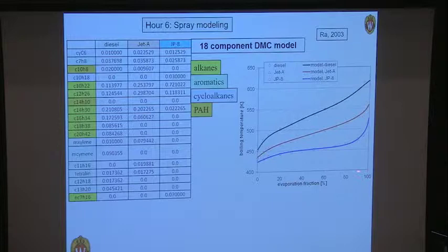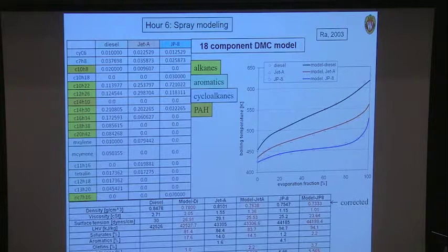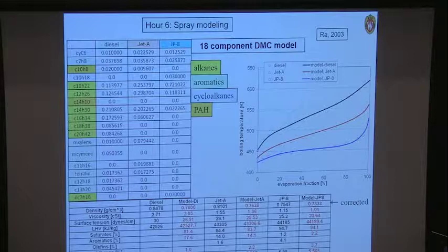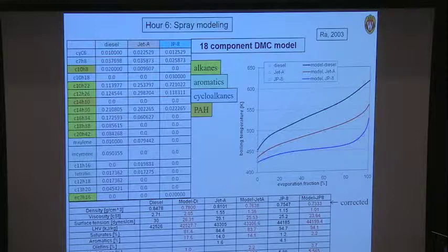By choosing an appropriate blend of these 18 species, we match the distillation curve. We can also match many other physical parameters: surface tension, viscosity, density, C/H ratio, and molecular weight for various fuels. Some we match better than others, but this is a doable approach for a real fuel.